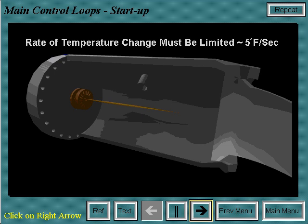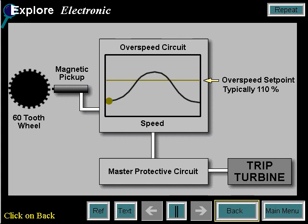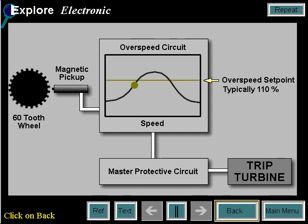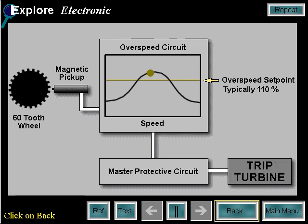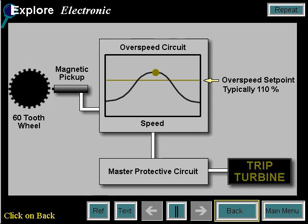The electronic overspeed protection function is performed as shown here. The turbine speed signal derived from the magnetic pickup sensors is compared to an overspeed setpoint. When the turbine speed signal exceeds the setpoint, the overspeed trip signal is transmitted to the master protective circuit to shut down the turbine. An electrical overspeed trip message will be displayed.